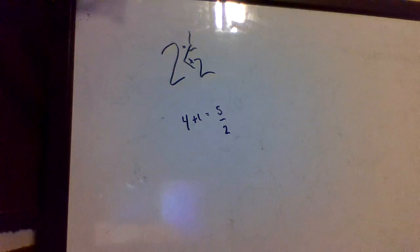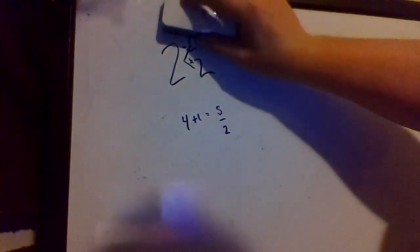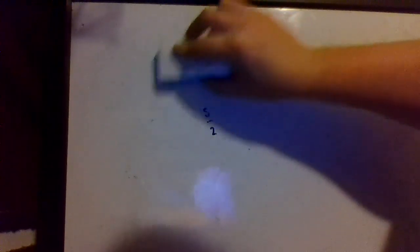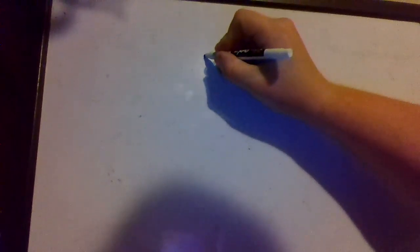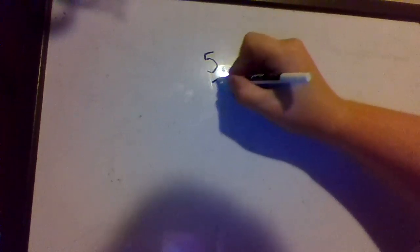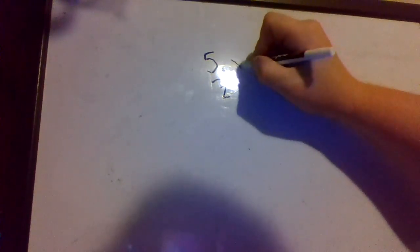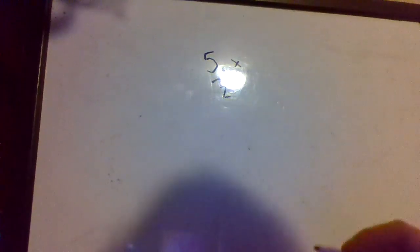So 2 and 1 half as an improper fraction is 5 over 2, or 5 halves. Now another key concept that we're gonna look at is the idea that when we change these numbers, we use the improper fraction we just found, 5 over 2, we multiply it by let's say 3 over 2.